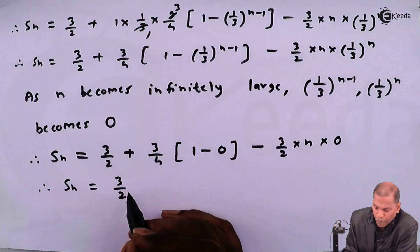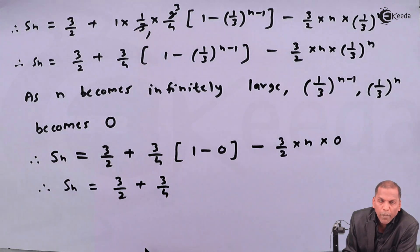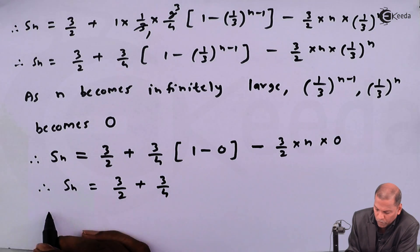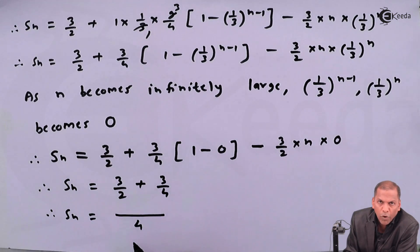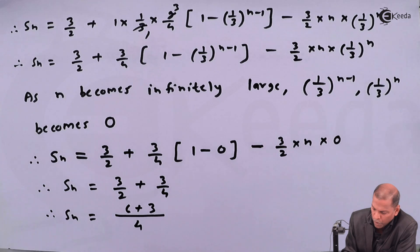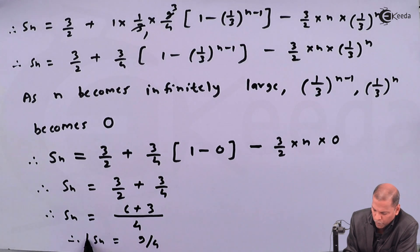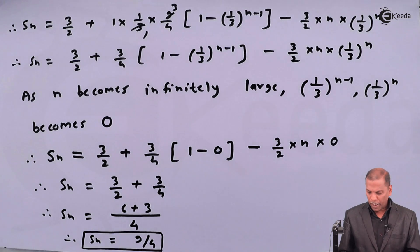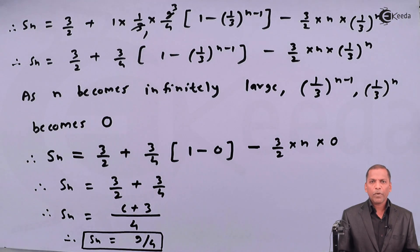On further simplifying: S_∞ = 3/2 + 3/4. Taking LCM of 4, we get 6/4 + 3/4 = 9/4. So the required sum to infinity is S_∞ = 9/4. Thank you.